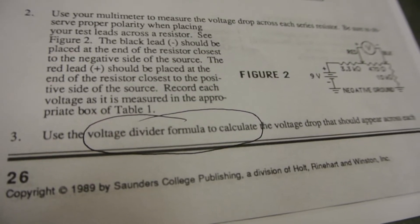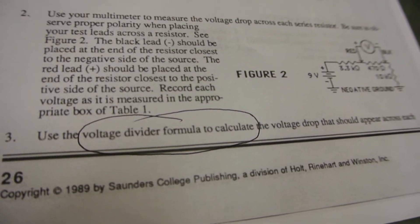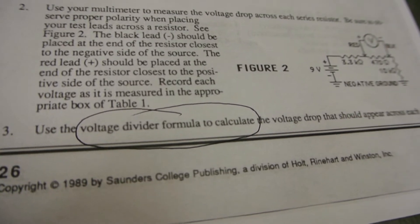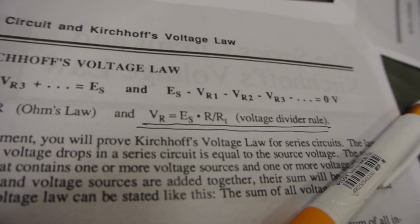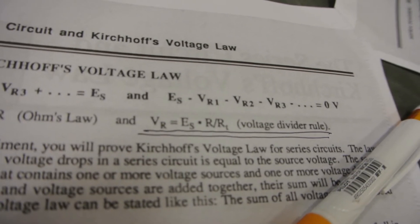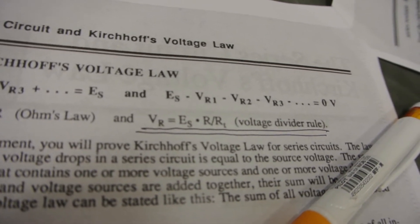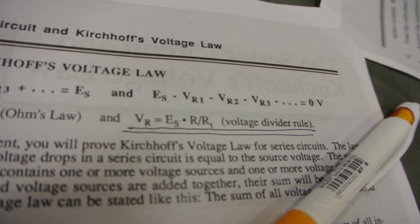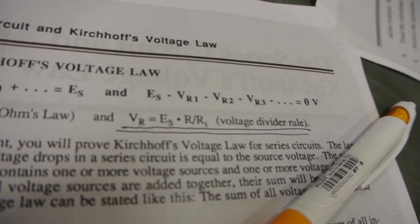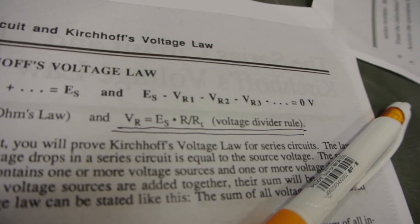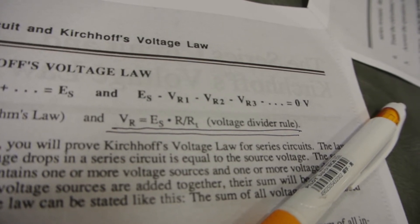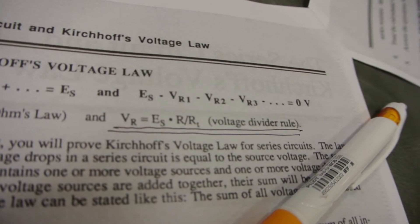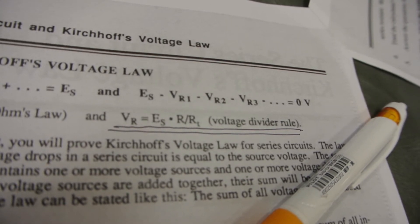The lab tells us to use the voltage divider formula to calculate the voltage developed across each resistor. The lab clearly shows on the second page, if we multiply the voltage source divided by one resistor over the total resistance of the circuit, it's a ratio method for working out the voltage across that individual part of the circuit.